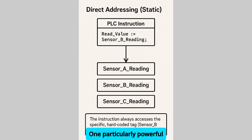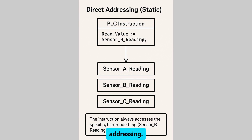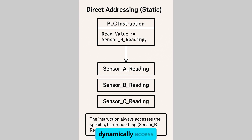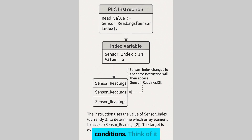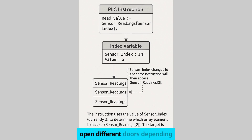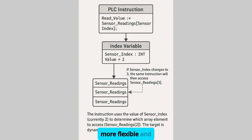One particularly powerful technique is indirect addressing. This allows your programs to dynamically access different memory locations based on specific conditions. Think of it like having a master key that can open different doors depending on what you need at the moment. It makes your programs more flexible and efficient.